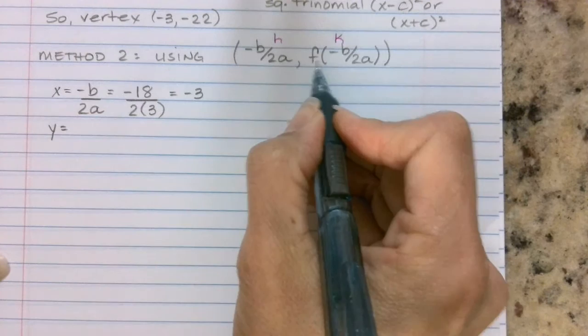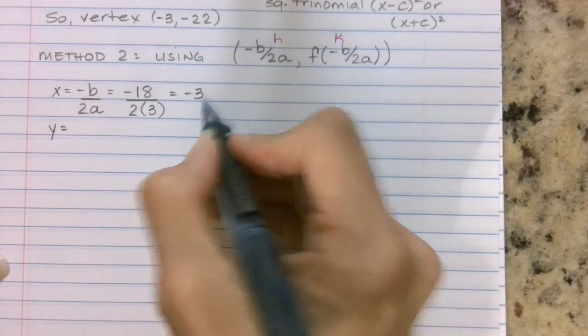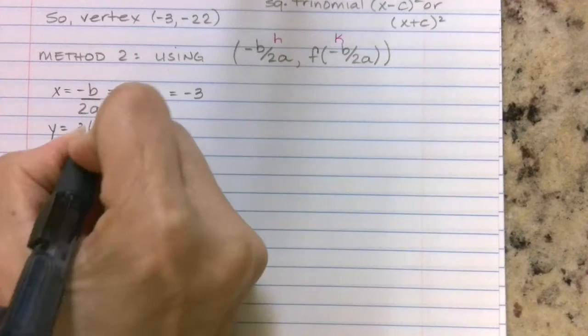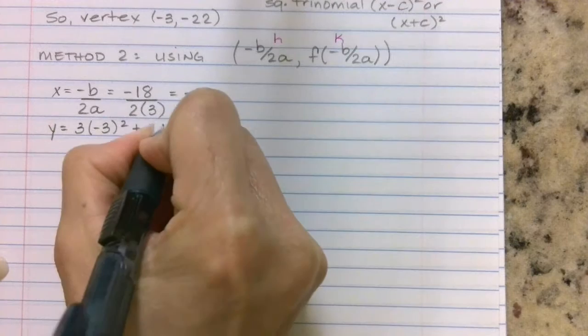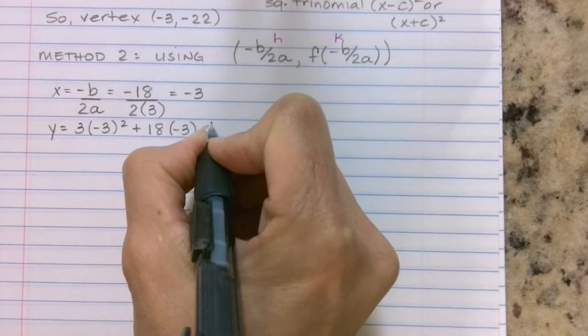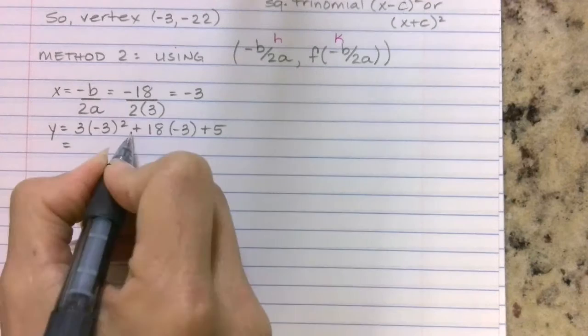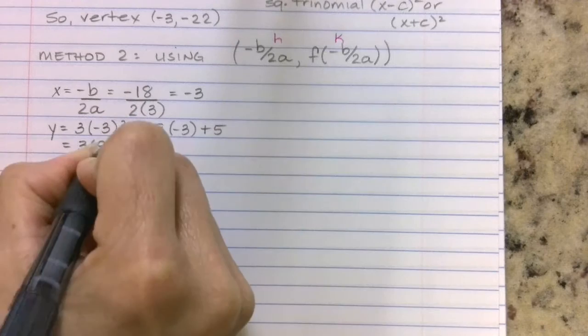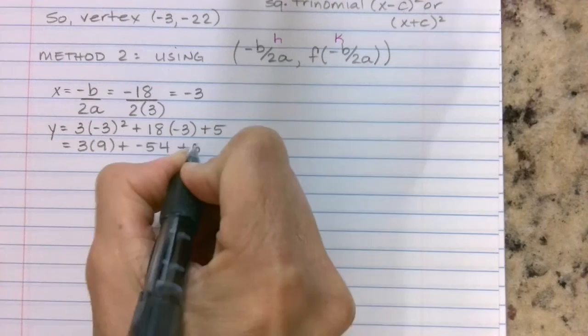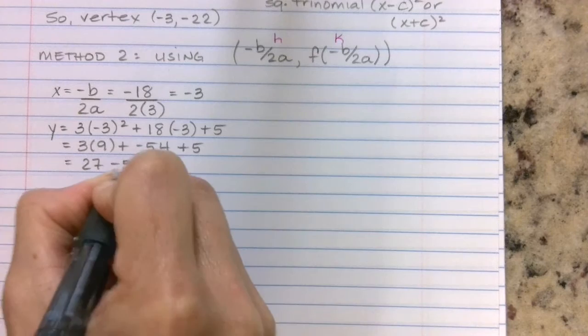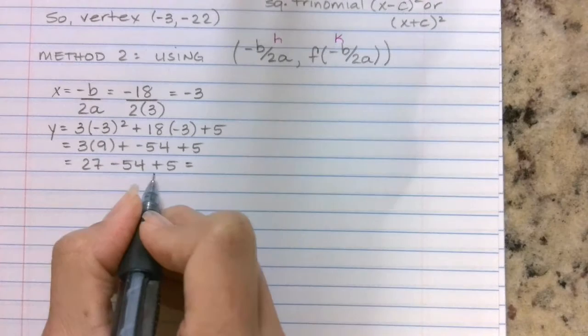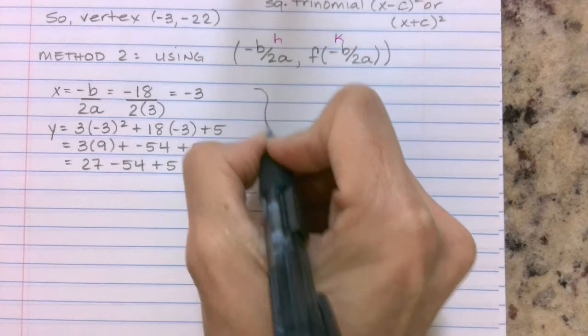When I simplify that, -18 divided by 6 ends up being -3. To find my y value, it says take, look at your function and substitute whatever you got here, in this case it's going to be my -3, and evaluate it. So going back to my original equation, 3(-3)² + 18(-3) + 5. Order of operations says we need to do exponents first. So 3(9) + 18(-3) is going to be -54 + 5. 3 times 9 is 27, minus the 54 plus the 5. 27 - 54 is -27, plus 5 is -22.